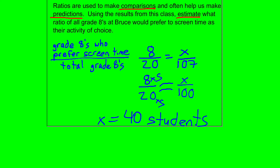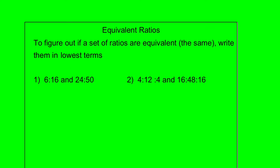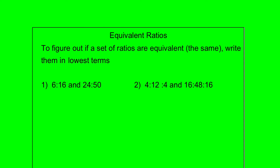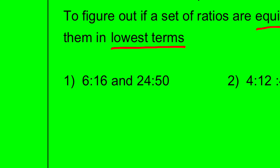One of the things we want to look at is how to figure out if a set of ratios are equivalent — meaning the same. The way we can do that is we can write the ratios in lowest terms. So I have a pair of ratios here: 6 to 16 and 24 to 50. They're not in lowest terms, so let's get them both in lowest terms and then compare them.